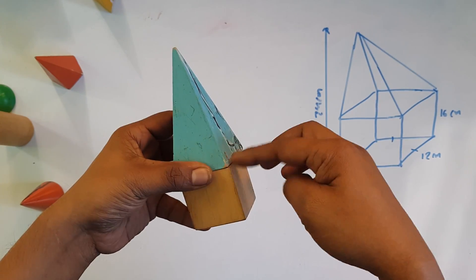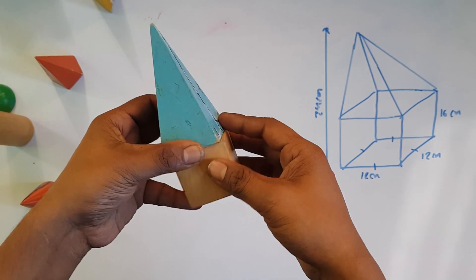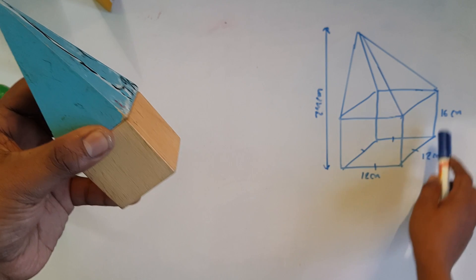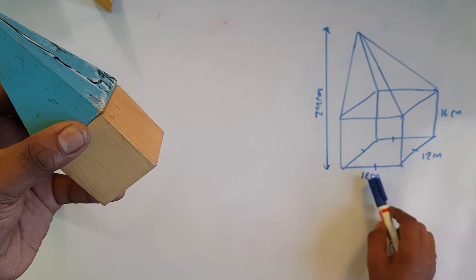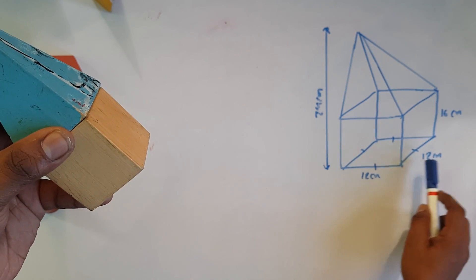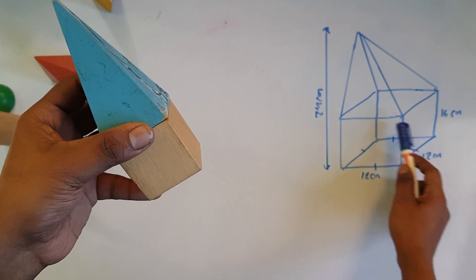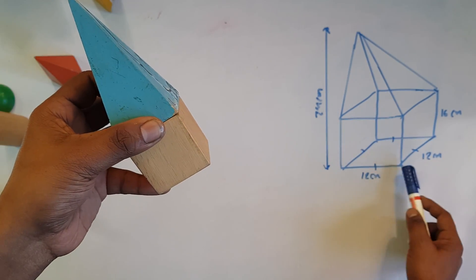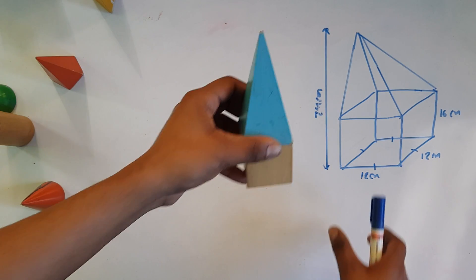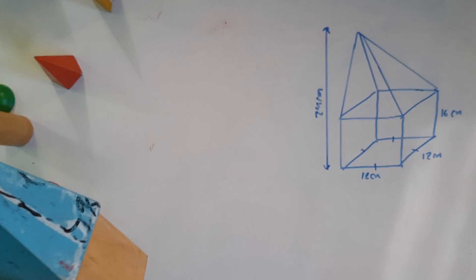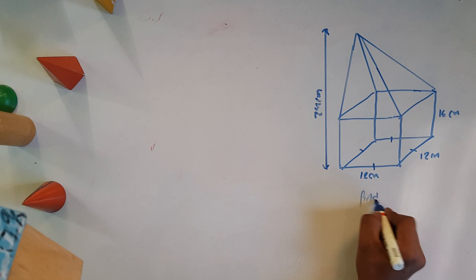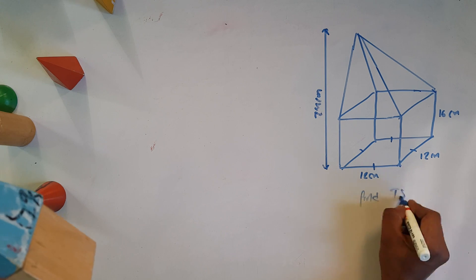This is a pyramid — a square-based pyramid. The length and breadth of the bottom surface are the same. The question asks us to find the TSA — the total surface area.